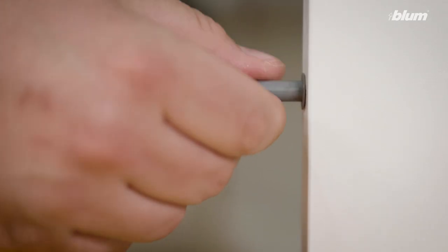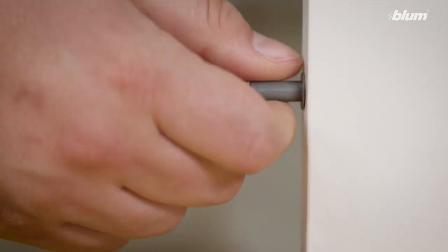Now that your plate is installed, you can adjust your Tip-On unit by turning it to the left and right to change your cabinet's side gap.